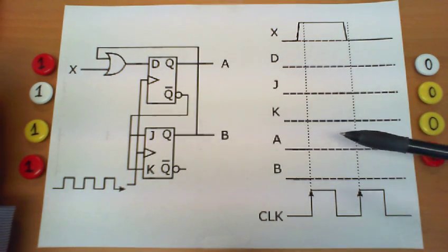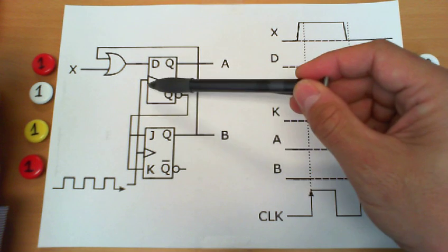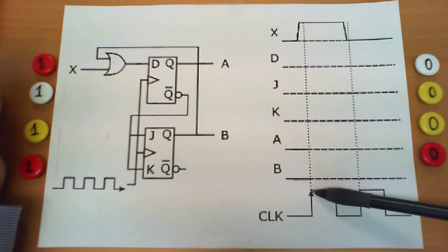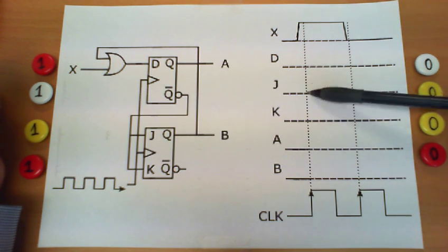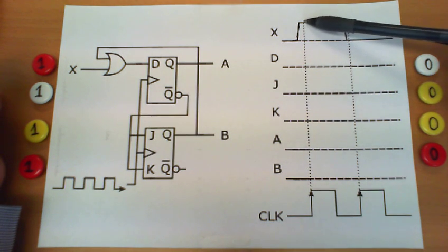The main observation here is that both flip-flops make a transition when there is a rising edge of the clock. So the trick to analyze this type of circuit is to focus mainly on the value of the signals right at the instance before the rising edge of the clock. And this is precisely what we are going to do.